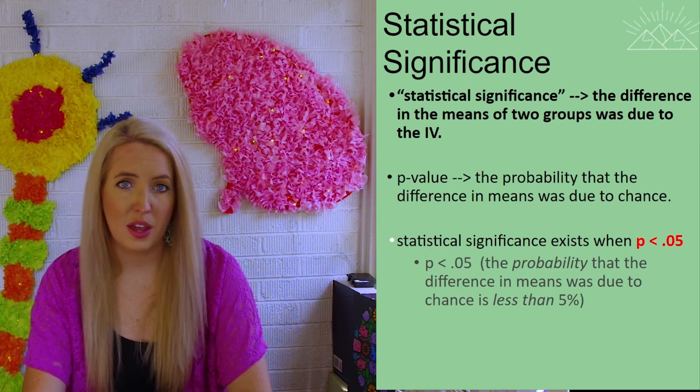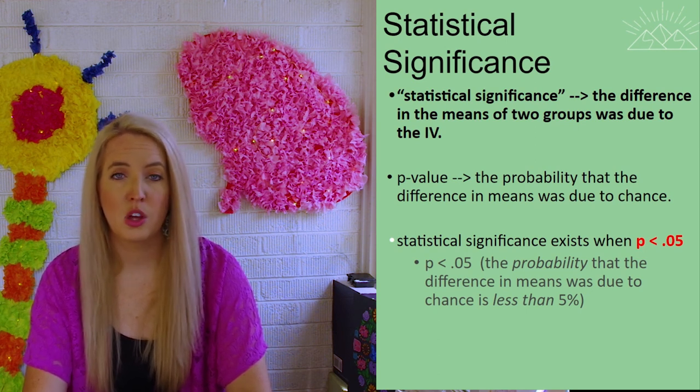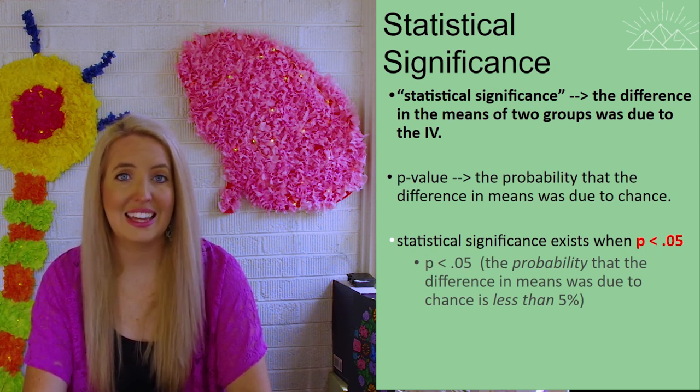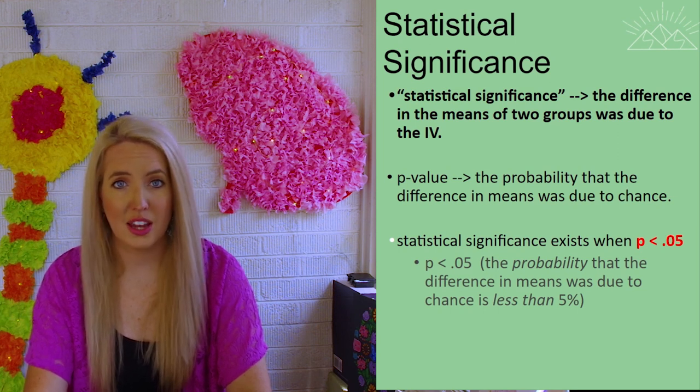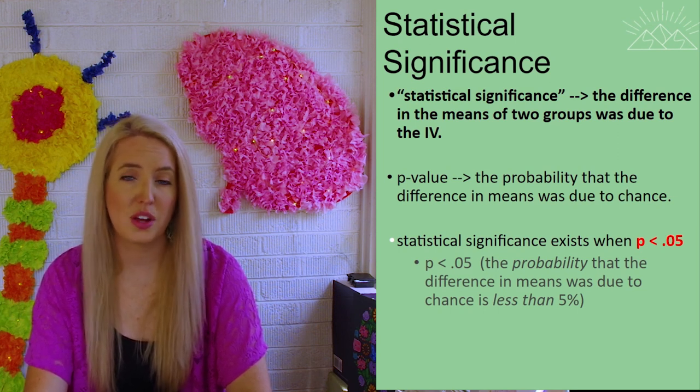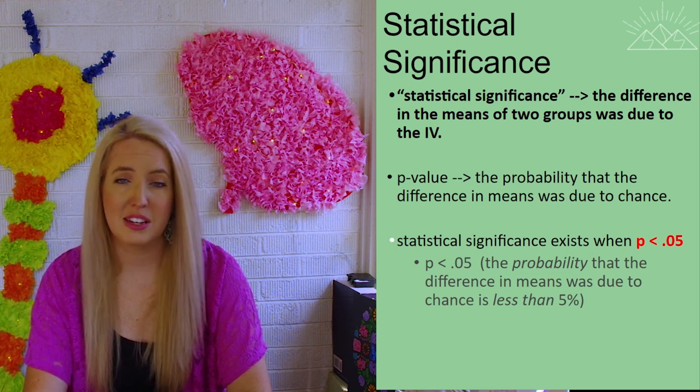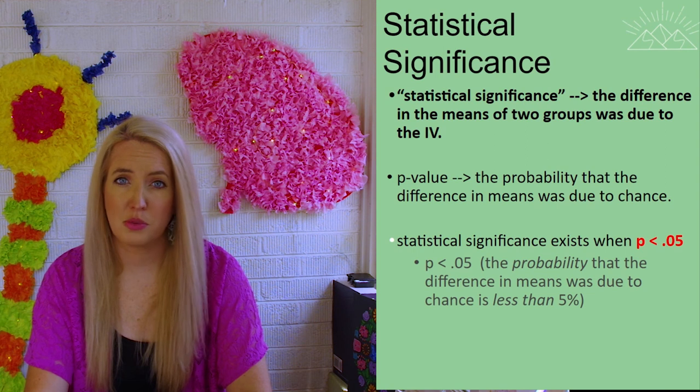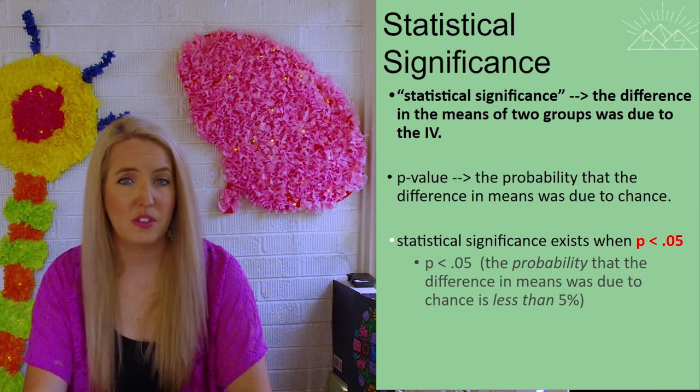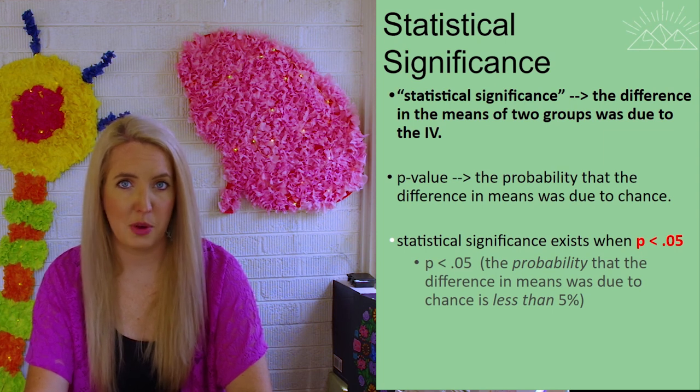But if a p-value is 0.25, we can say that that is statistically insignificant. That there's a 25% chance that we got those results due to a confounding variable, and that's too great of a chance. The experiment is not valid, and we would have to change the parameters or control for some more confounding variables in order to make sure that our results are due to what we actually did in the experiment.